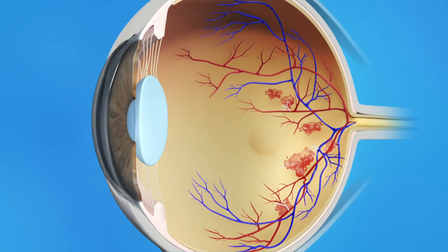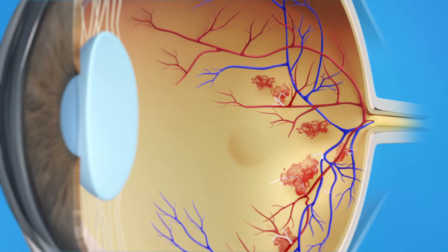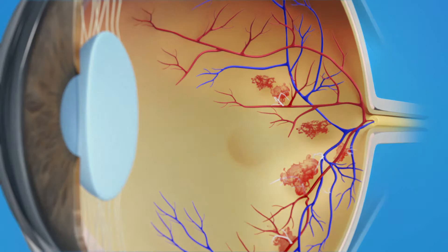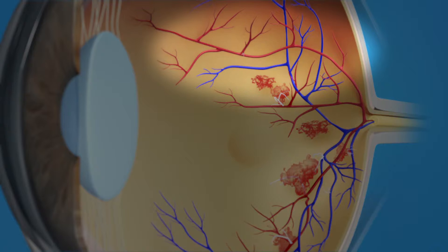Proliferative diabetic retinopathy, or PDR, is the stage of diabetic eye disease where abnormal blood vessels begin to grow on the surface of the retina. This is called neovascularization. With PDR, many blood vessels in the retina close off, keeping blood from flowing properly to the retina. The retina responds to this problem by trying to grow new blood vessels. However, these new abnormal vessels do not provide proper blood flow.